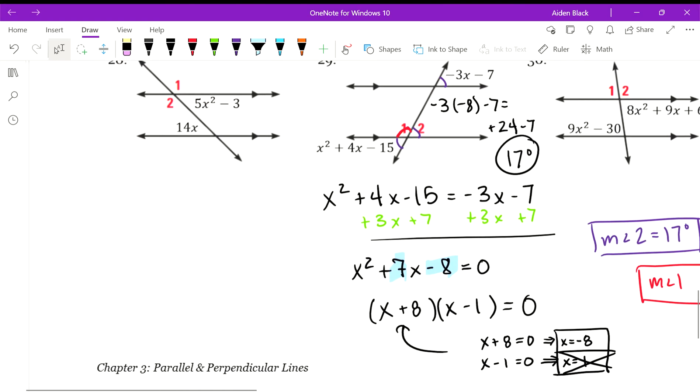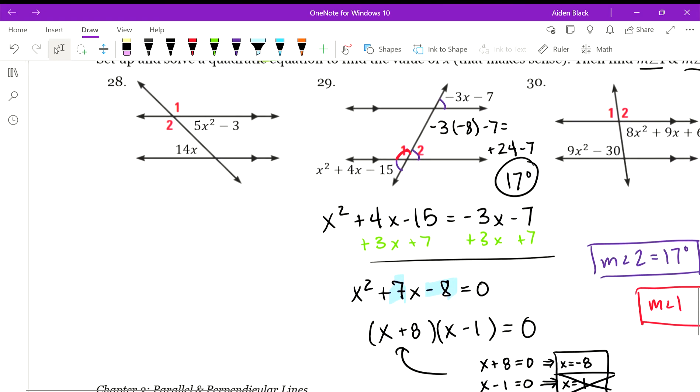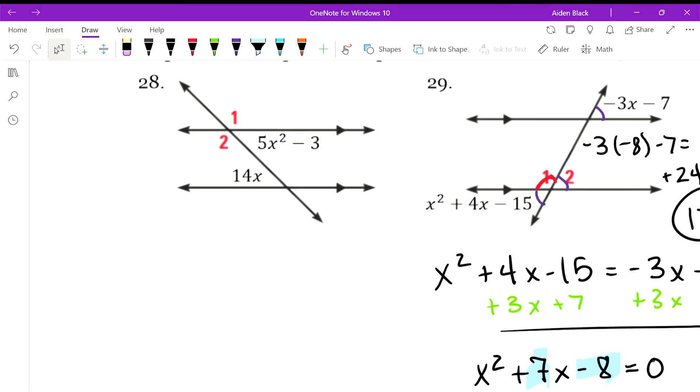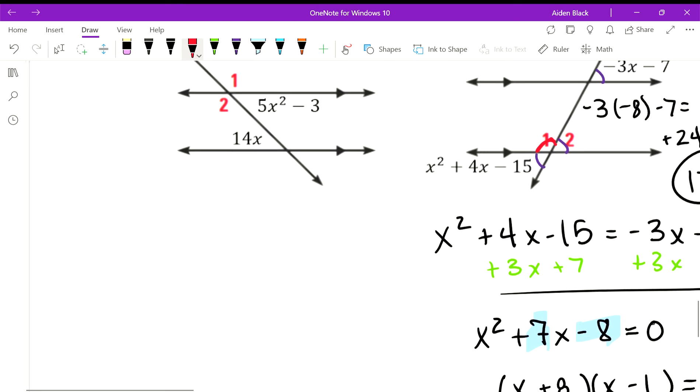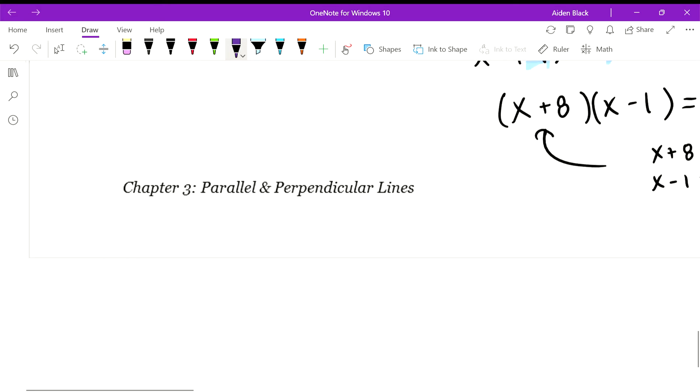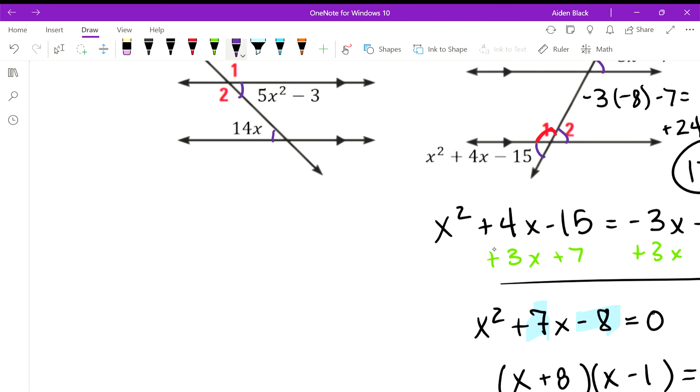Now let's go through question 28, because in question 28 we have a leading coefficient that is not 1, so it's a little more difficult. When looking at these two angles, you'll see that the relationship between them is that they are alternate interior angles, which you know to be congruent.